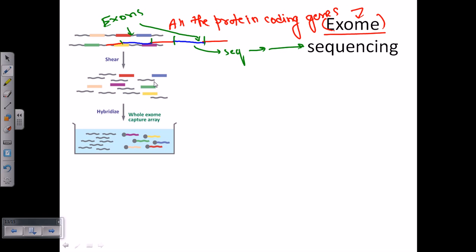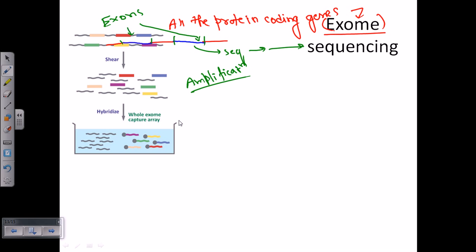For sequencing purposes, we need to select the specific DNA that we want to sequence in a pure and sufficient quantity. To increase the amount of that particular DNA, we need to use an amplification process. There are three or four different types of amplification processes we can use in exome sequencing. One of them is the array-based technique, called array capture technology or exome capture array. We take a microarray, which contains all the genome database sequences placed on it, and then we take our sheared sequences.